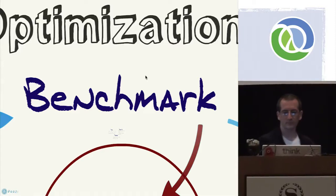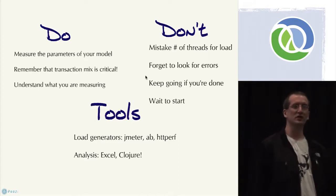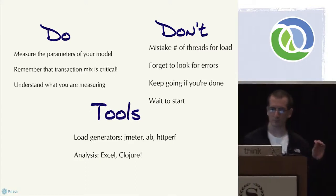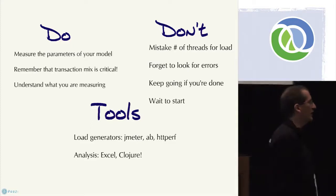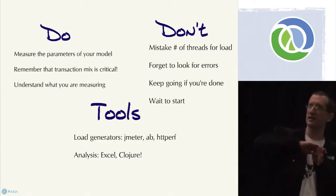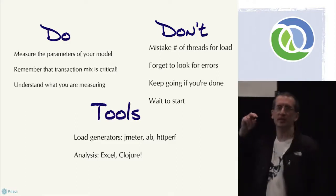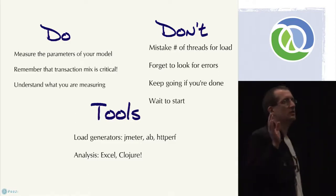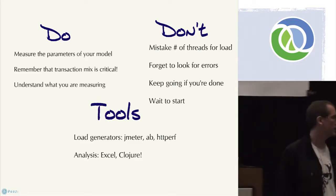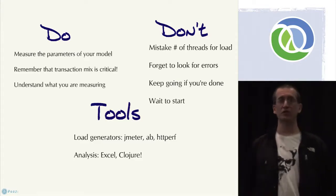Don't wait to start — you can do this early in your project. As for tools, we've used JMeter on other projects and also ab and HTTP Burp. There are tons of options out there. What you're after is the ability to drive the system at different loads and capture the distribution of latencies. If you can do those two things it doesn't matter what tool you use. For analysis of load results, you can use whatever you want — I've seen people use Excel — but we have this great tool for analyzing data called Clojure.